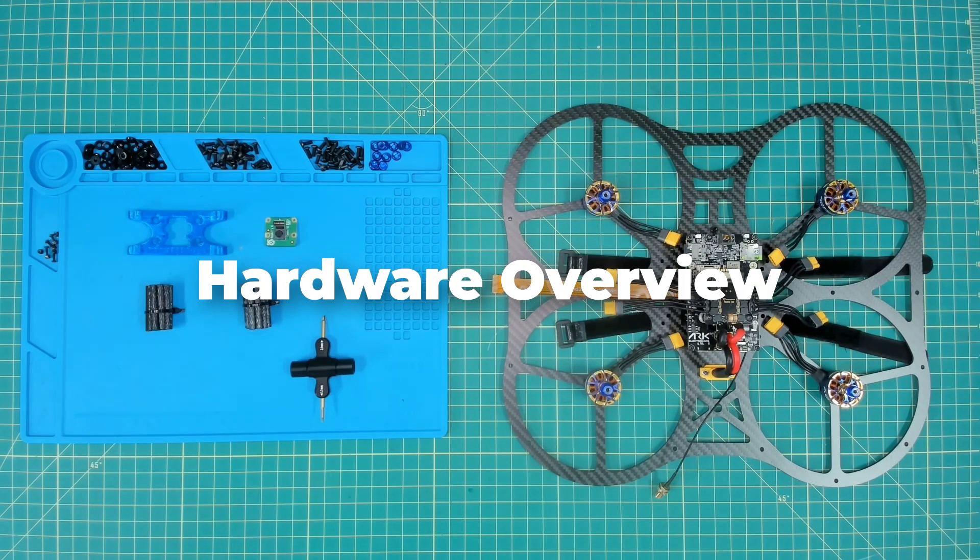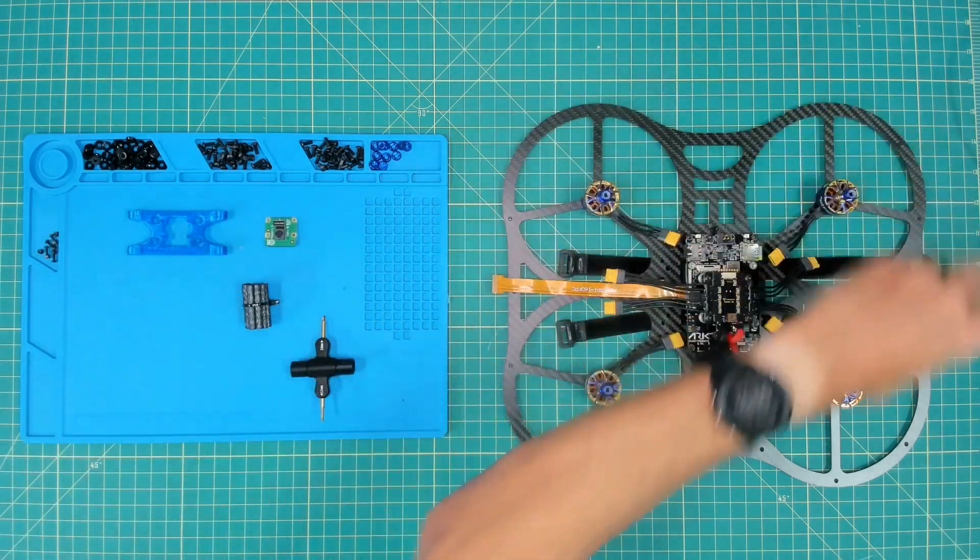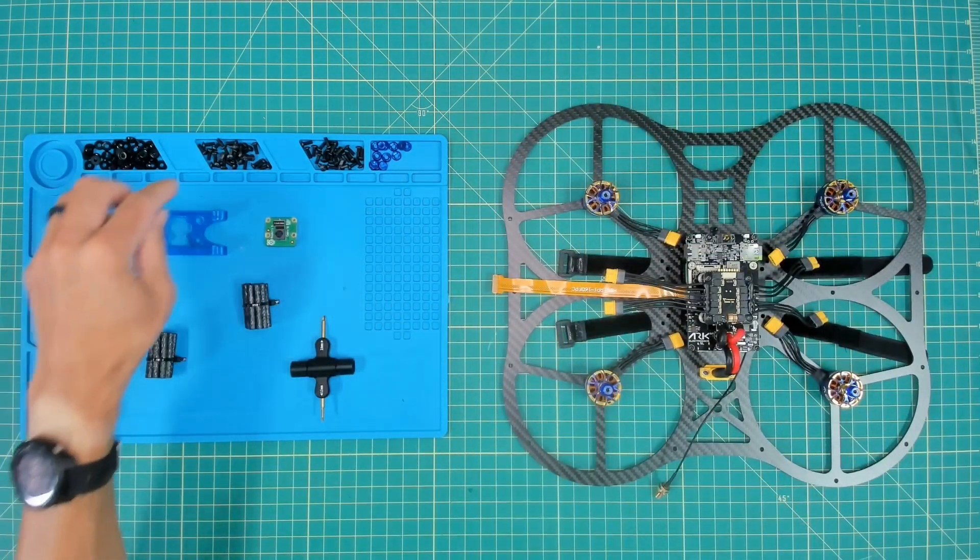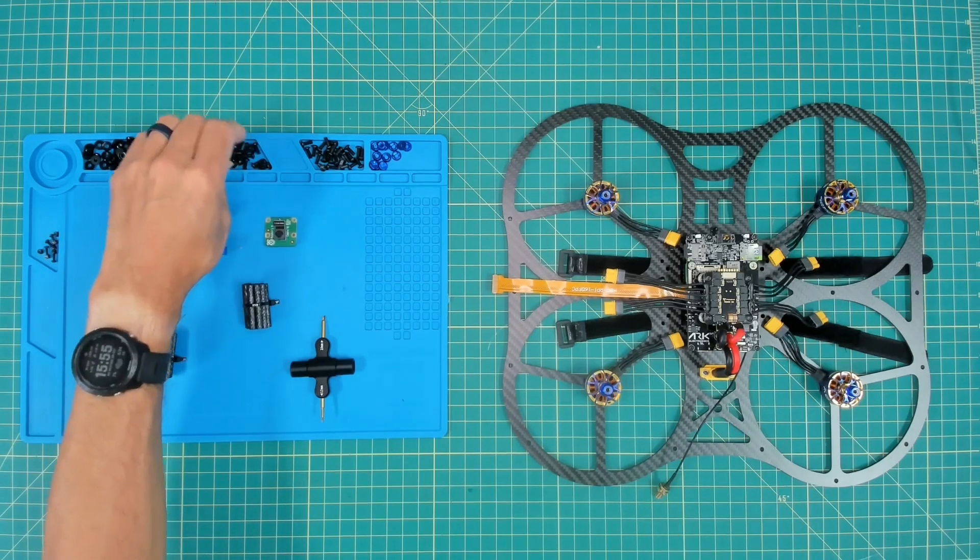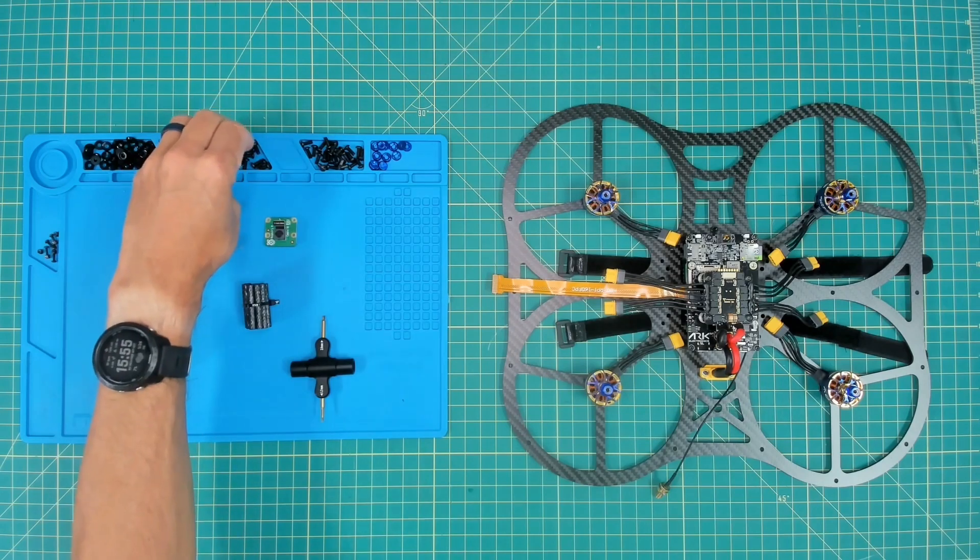We have standoffs which we will mount all around this top plate. We have our eight millimeter screws, those are the ones that we want to use for the standoffs. The six millimeters are what we use to mount the motors.